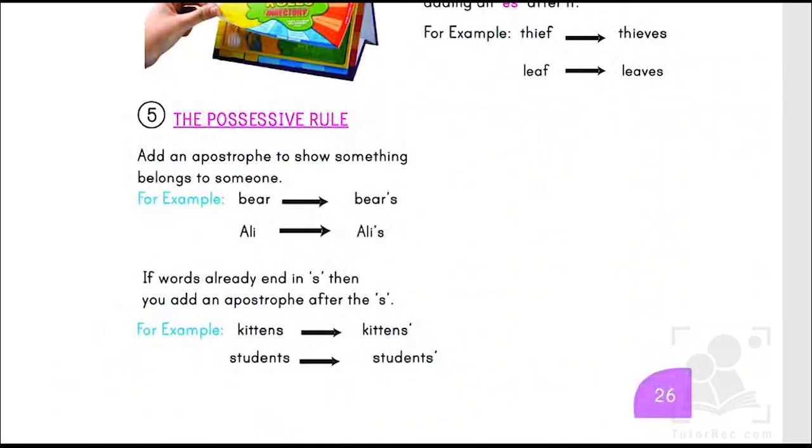Then rule number five, the possessive rule. We need to add an apostrophe to show something belongs to someone. For example, bear, bears, Ali, Alis. If words already end in S, then you add an apostrophe after the S. For example, kittens, kittens, students, students.